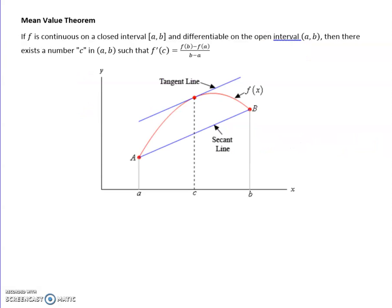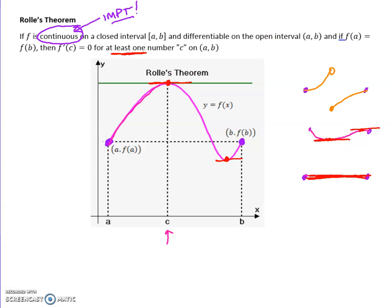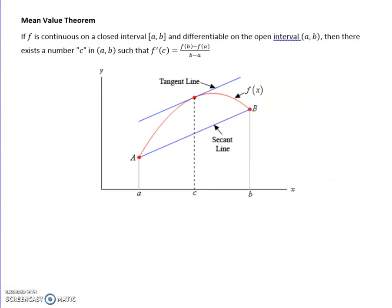Now let's move on to the mean value theorem. The MVT says something a little different. Rolle's Theorem says that the ends have to be exactly the same, but that's not reality. More than likely, what you get on one end is not going to be the same thing as what you get on the other end. So here I have a y-value that is wildly different than the y-value on the other end.